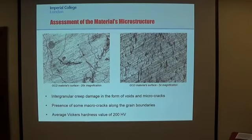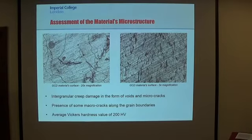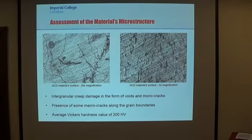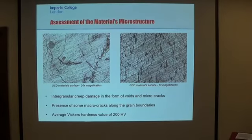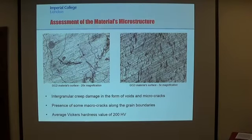Prior to performing the tests, an assessment of the material state was made. As you can see from the picture on the left, some microcracks along the grain boundaries have been found. Moreover, some creep damage in the form of voids and microcracks has also been observed, as depicted in the picture on the right. Finally, an assessment of the material's hardness revealed an average Vickers hardness of around 200 HV, showing no substantial changes when compared to an undamaged material.